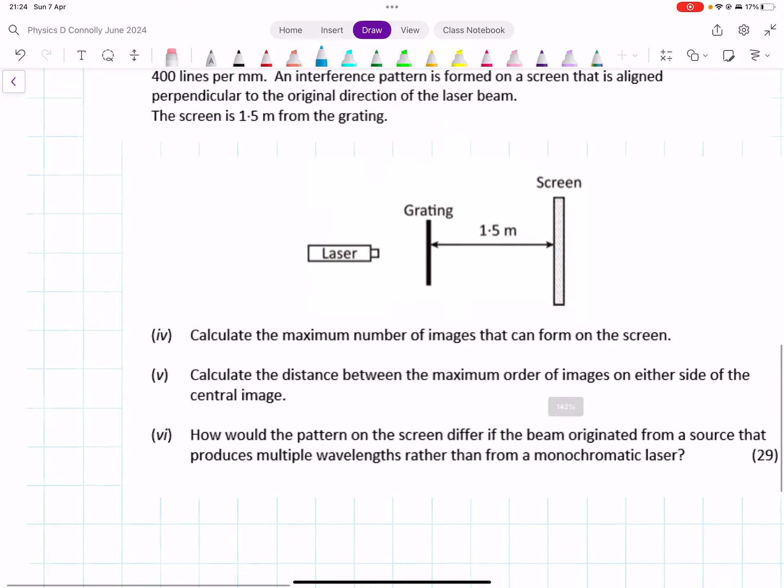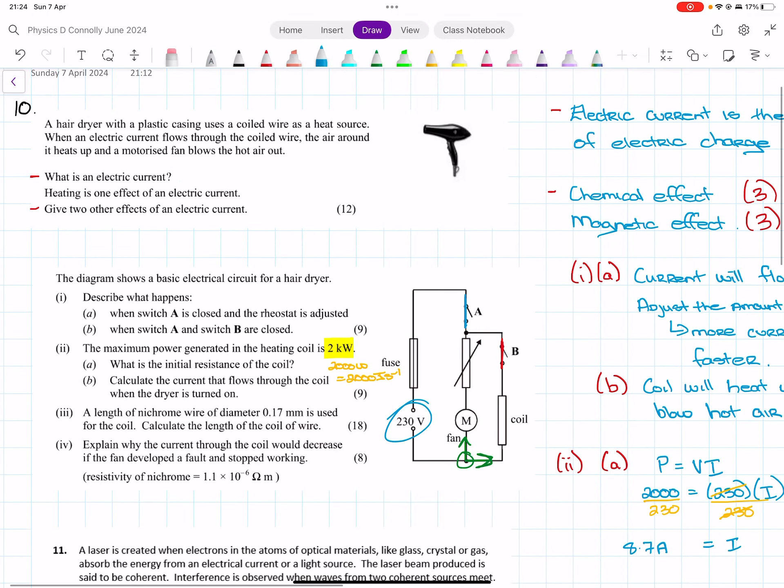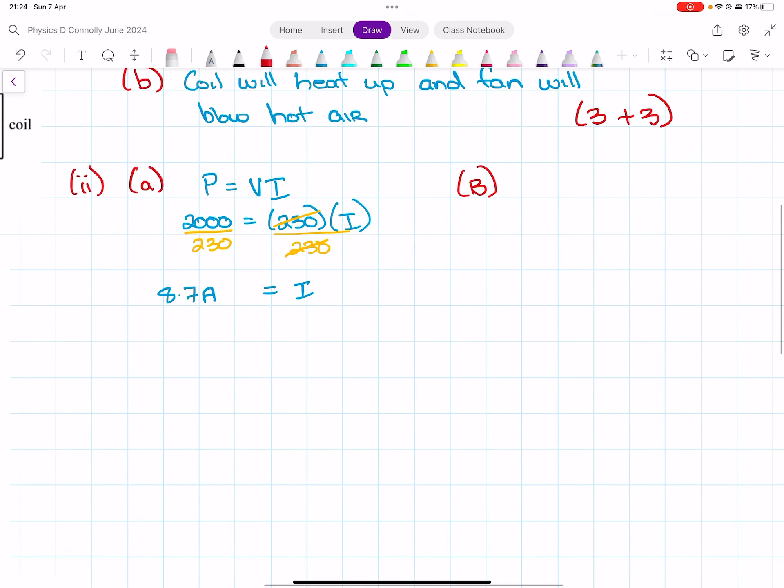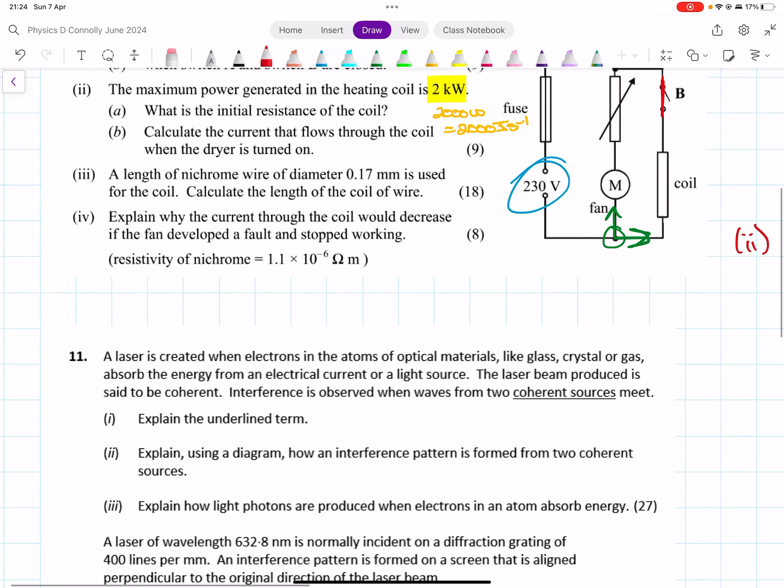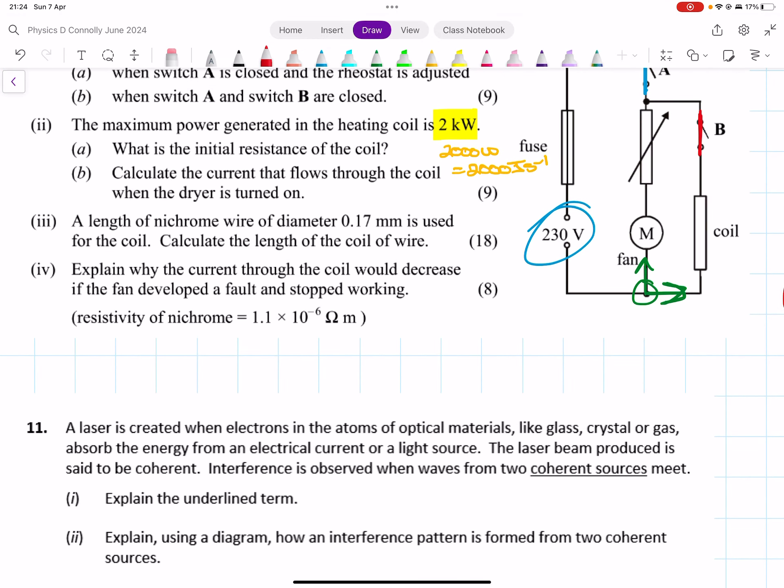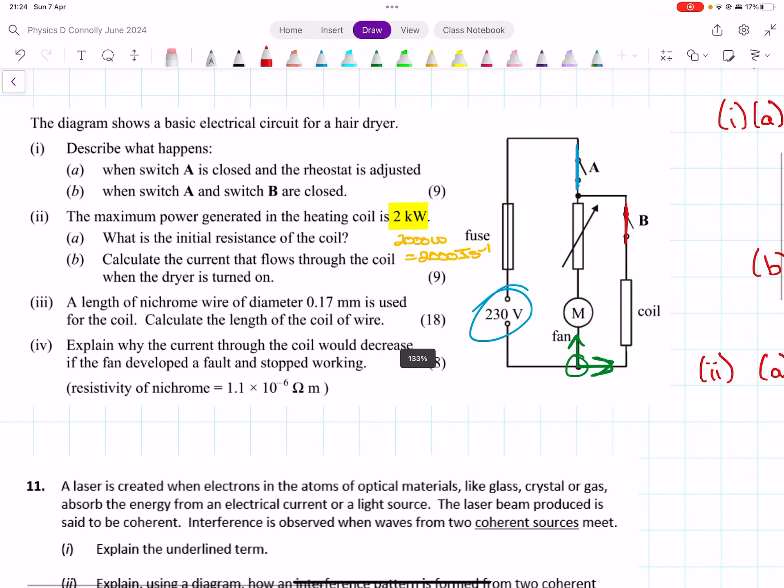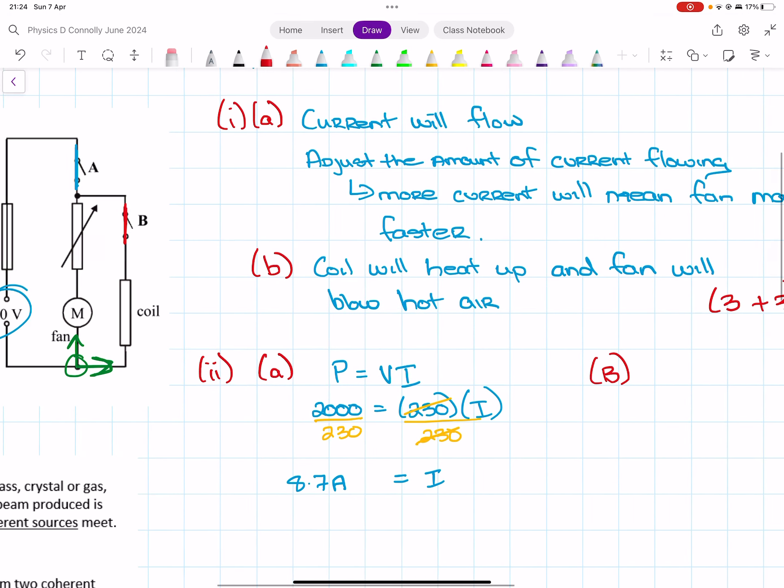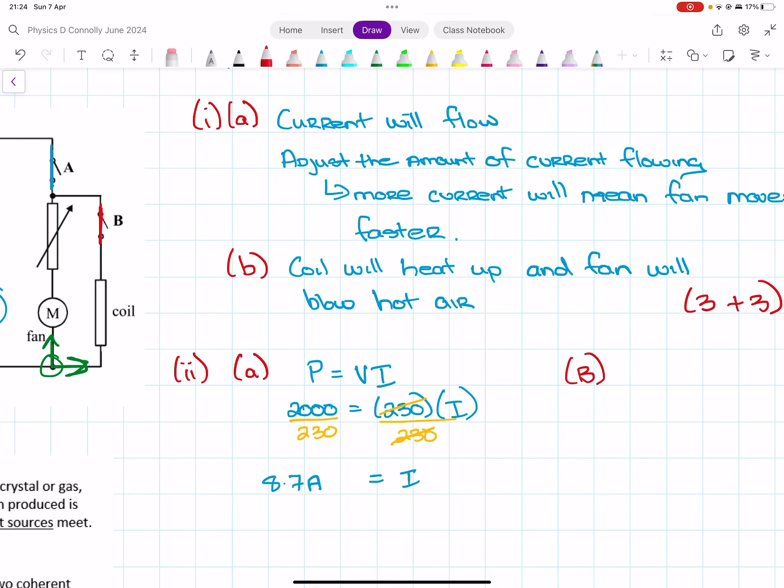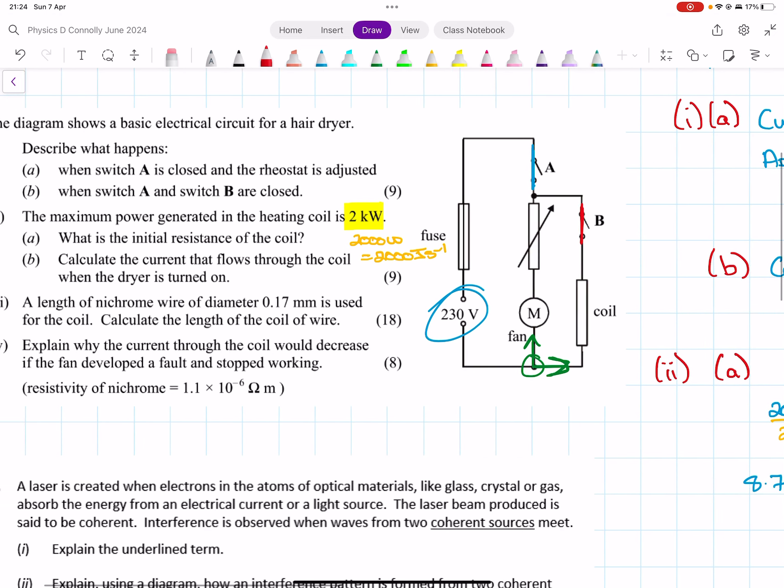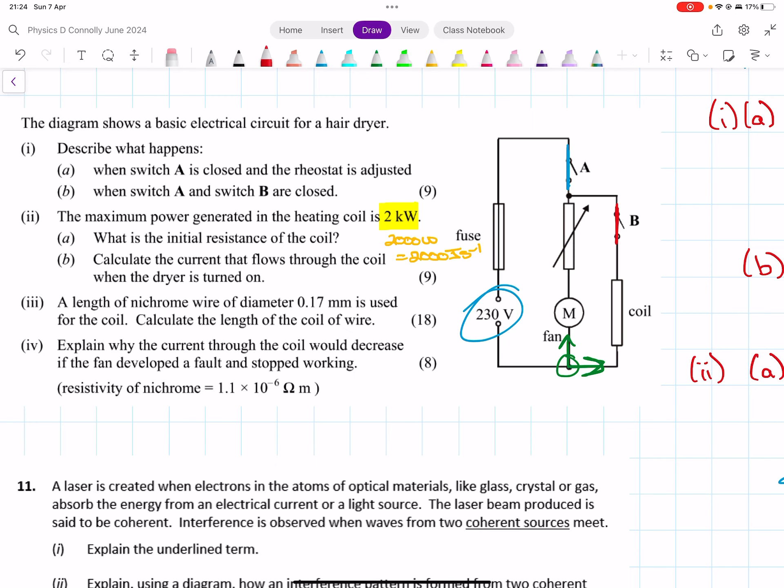I didn't check the marks. I'll check in a minute. Part B then—calculate the current that flows through the coil when the dryer is on. Hang on, that was the initial resistance.